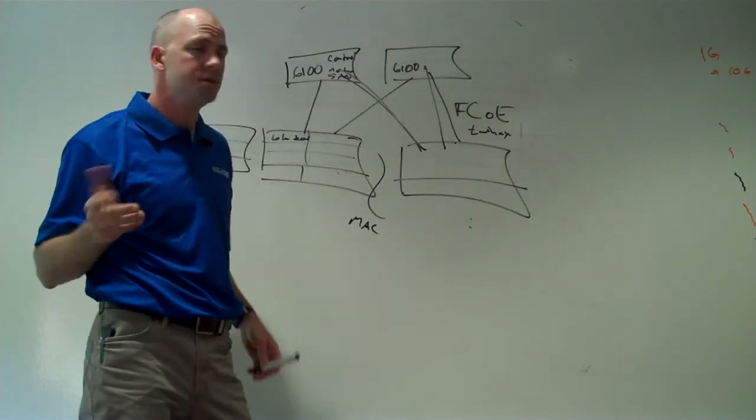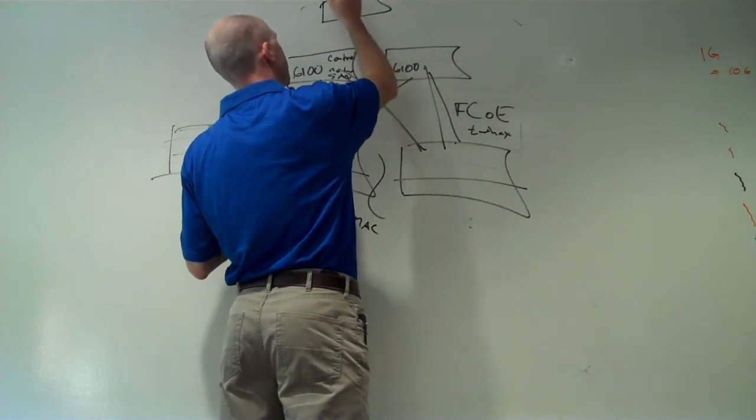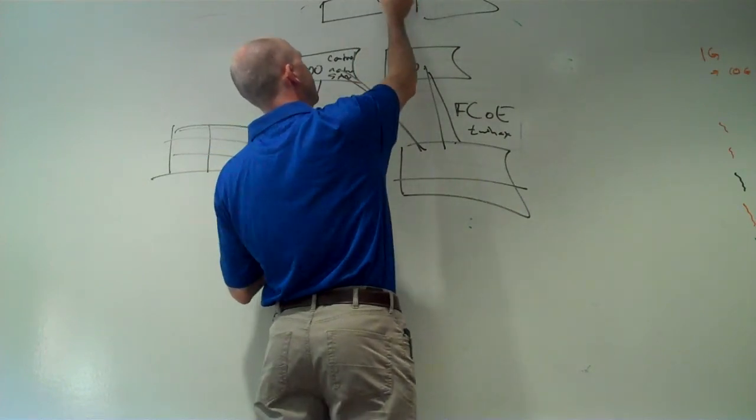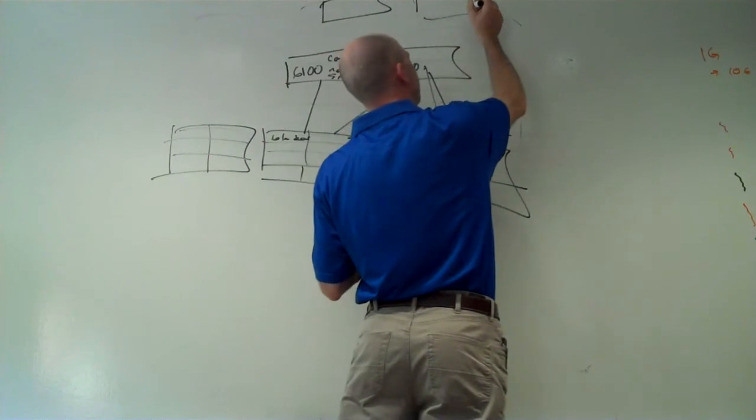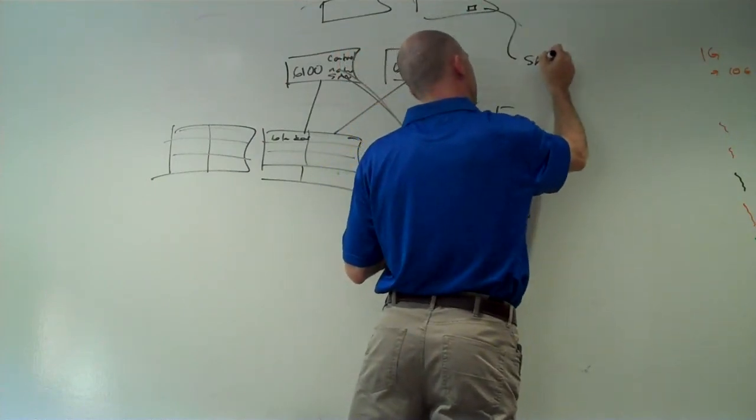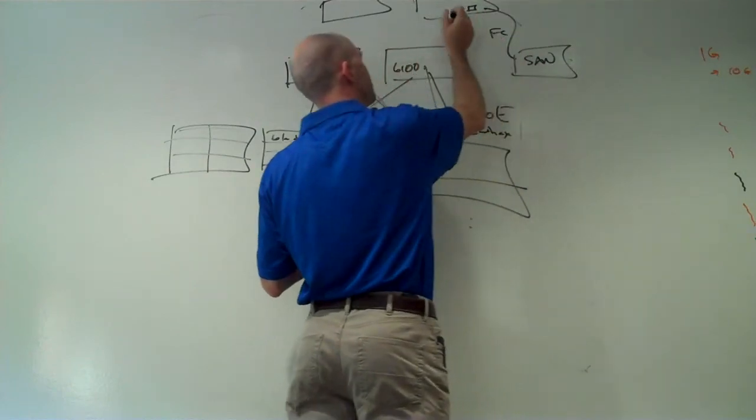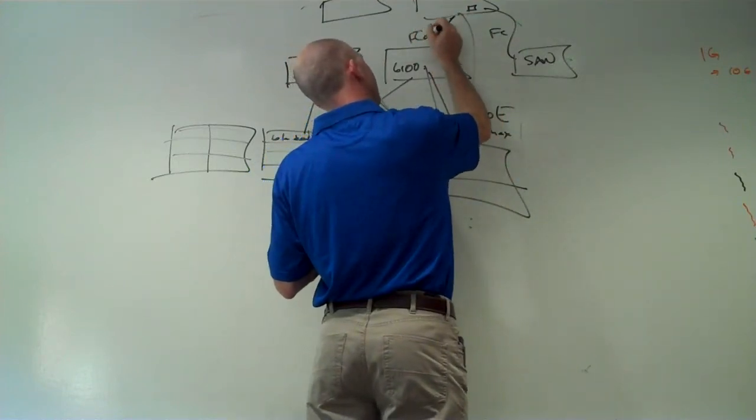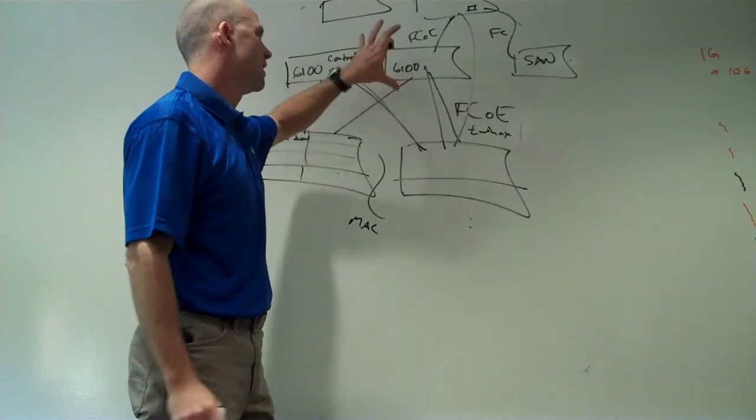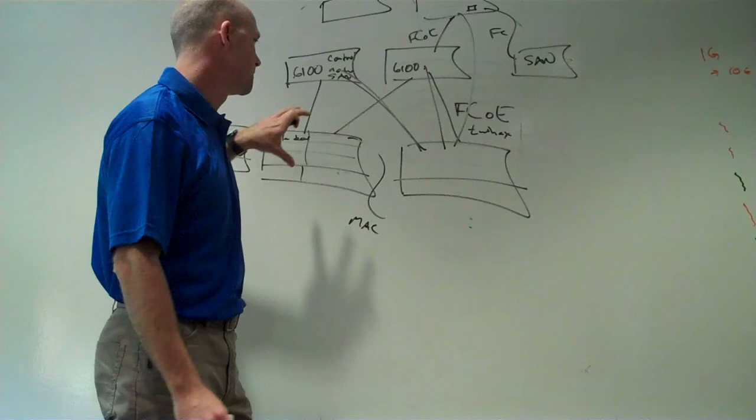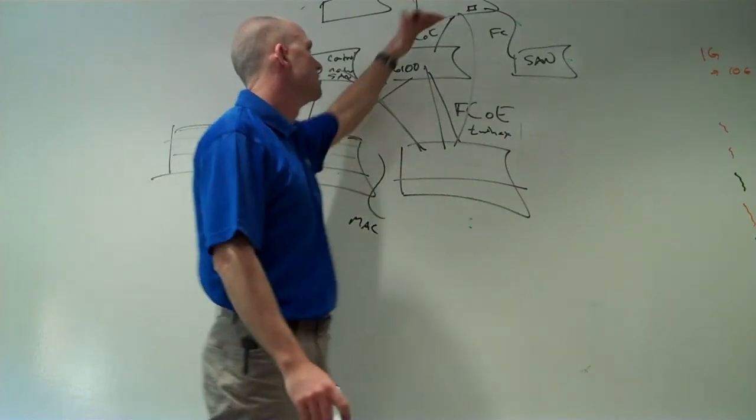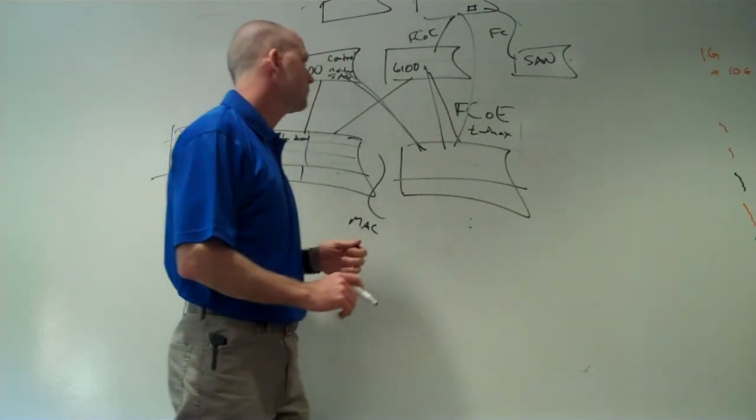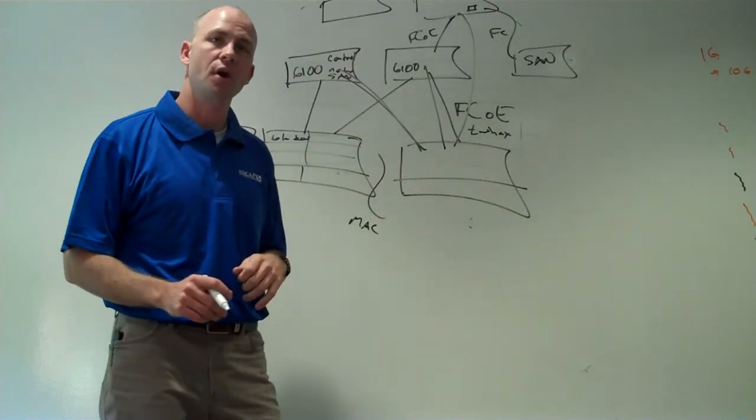So how do we connect into the storage area network with this? Well that's where the Nexus 5000s come in. The Nexus 5000s have the ability to connect into a traditional fiber channel architecture and combine the fiber channel into Fiber Channel over Ethernet. So we can take a lot of the necessity to have a complicated SAN infrastructure and add on to it when we add the blade servers by using the Nexus 5000s to tap into the existing storage area network